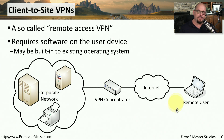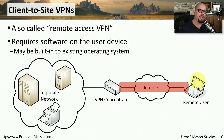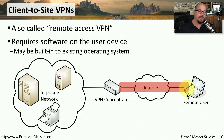If you have your laptop at a hotel or a coffee shop and you want to communicate back to corporate, you simply start the SSL VPN software on your laptop, and it creates this encrypted tunnel back to your VPN concentrator at your corporate facility. This means if anyone was to capture any of this traffic between your workstation and this VPN concentrator, all they would see is encrypted communication.